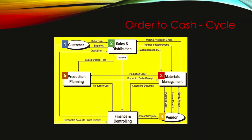Production of the laptop starts once we have received all the raw materials. Once production is done, we ship the goods — the laptop — to the customer. After the goods are delivered, the confirmation is sent to the Finance department so that invoices are sent to the customer and the vendor is paid for the raw materials. So that is how a typical business process works in SAP: receive the order, then planning, then production, and finally invoicing.